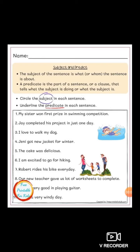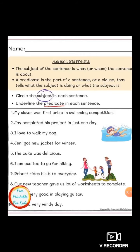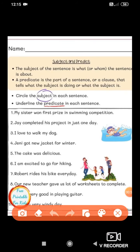Now let's see subject and predicate with the help of more examples. On your screen you can see a few examples. We have to underline the subject, and the sentence which is not underlined is the predicate. The first sentence: 'My sister won first prize in swimming competition.' My sister is the subject. 'Won' is the verb, so 'won first prize in swimming competition' is the predicate — predicate always starts with a verb. Subject consists of a noun or pronoun — 'my sister' is a noun.